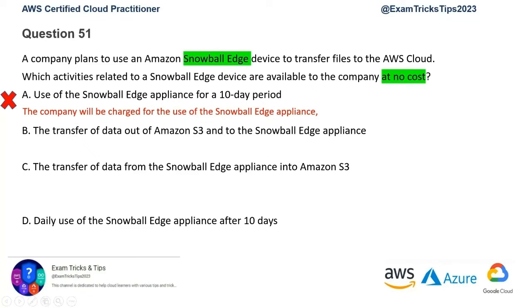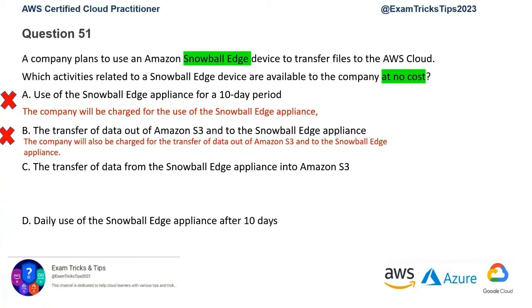Third option: the transfer of data from Snowball Edge appliance into Amazon S3. Based on the same exam tip, data transfer into cloud is free. This is true for almost any service, and even though Snowball is a specialized version of data transfer, it applies there as well. Amazon would like data to come into cloud infrastructure so that you use their services. If you're taking any data out, it is chargeable — which discourages customers from taking data out unless needed for some reference purpose.